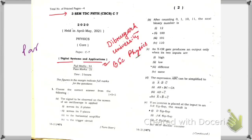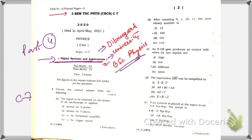This is part four of De Bruyne University BSc Physics paper solution. We are solving the C7 Digital Systems and Applications paper of 2020, third semester. Links to previous lectures are given in the description box. Please subscribe to the channel and hit the bell icon to get notified when new videos are uploaded. Share with your friends and hit the thumbs up button as well.